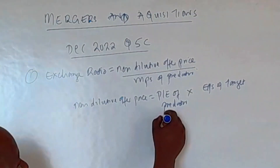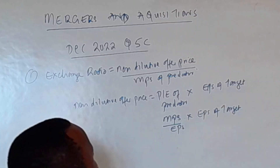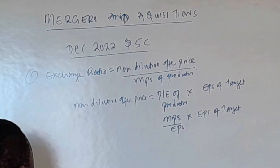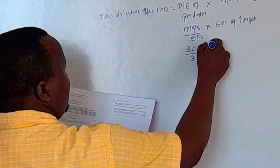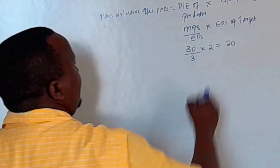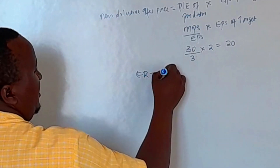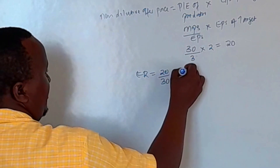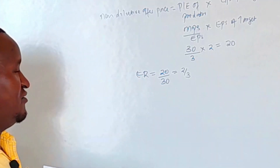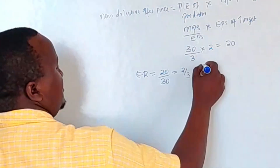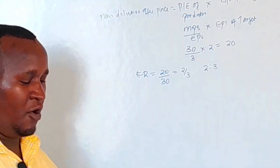To get the P/E ratio, it is MPS over EPS. For Alpha, MPS is 30 and EPS is 3; for Beta, EPS is 2. So the non-dilutive offer price is (30/3) × 2 = 20. Therefore, the exchange ratio is 20 over 30, which gives us 2/3 — meaning we give them two shares for every three shares they hold, with no dilution in ownership.